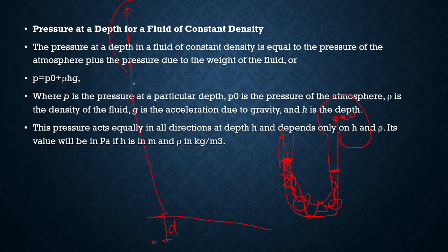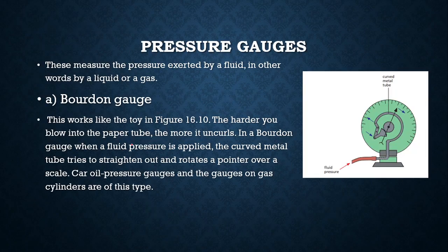Where P is the pressure at a particular depth, P0 is the pressure of atmosphere, ρ is density, g is the acceleration due to gravity, and H is depth. This pressure acts equally in all directions at depth H and depends only on H and ρ. Its value will be in Pascals if H is in meters and ρ is in kilograms per meter cubed.